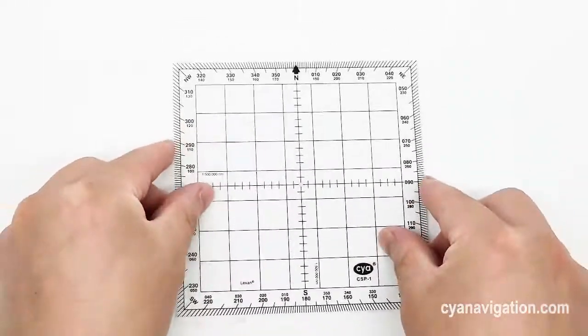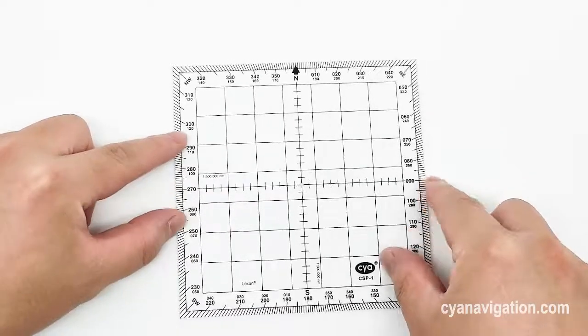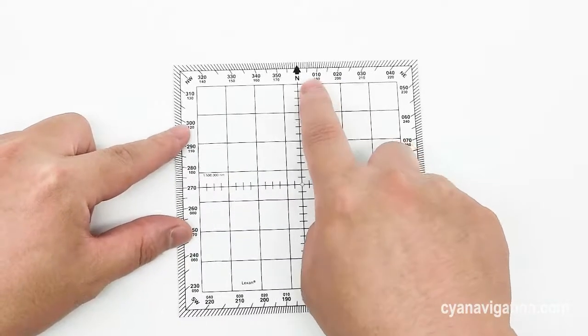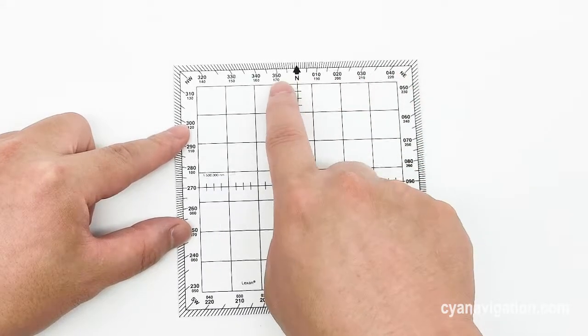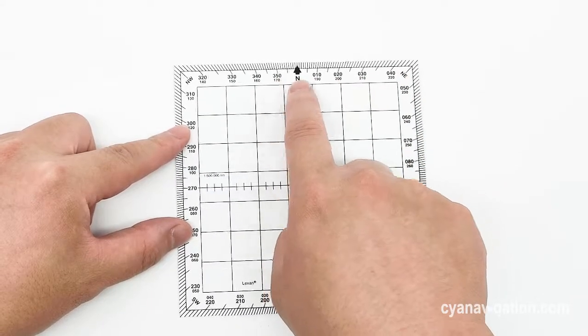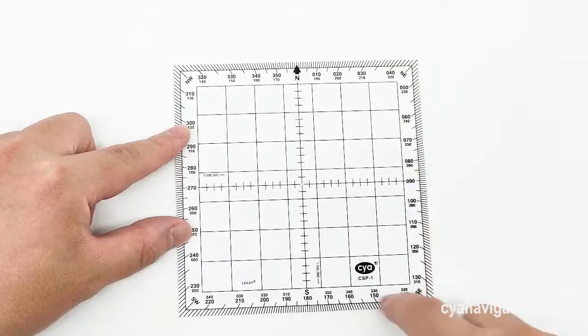And when we read the numbers, we can see it reads from 0 to 360 on the outer edge.